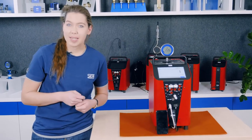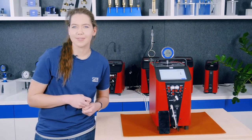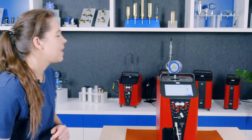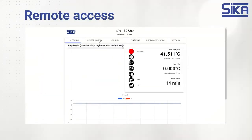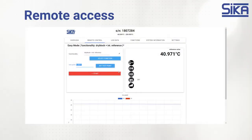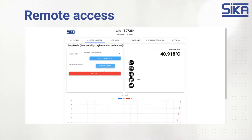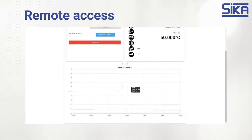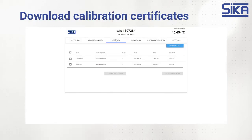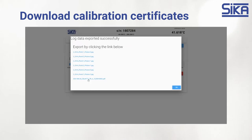The web app can offer you several important and workload-reducing functions. You can start a calibration process remotely, for example. Simply enter the desired temperature in the field and press start. The measuring point is now approached and shown live in the chart below. An additional key feature is the ability to conveniently download all the calibration certificates from the network.